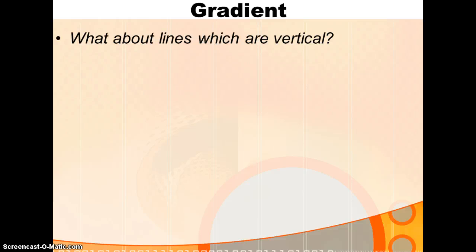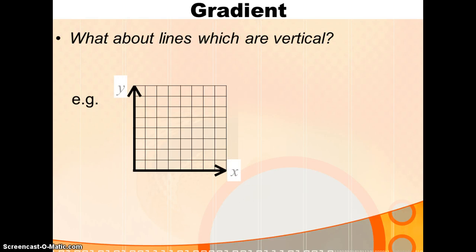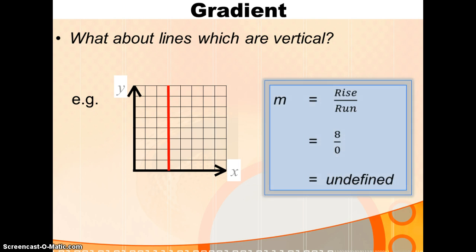What about vertical lines? If you're climbing up vertically, what can you say about the gradient? Well, again, let's take our formula. Rise over run. Now, in this section, where rise is 8, where run is 0, we're not moving across at all. And you cannot divide by 0. So, we say that all vertical lines have an undefined gradient.